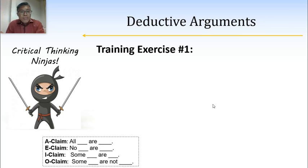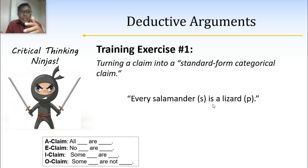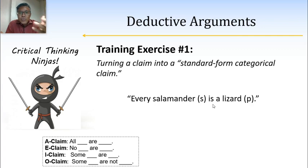Here is our training. The first step is to take a claim and turn it into one of our four standard form claims: A, E, I, or O. Let's take a look at this claim: every salamander is a lizard. You can use abbreviations — every S is a P — to reduce what you're looking at. Which standard form claim does 'every salamander is a lizard' fit? By saying 'every salamander,' we're talking about all salamanders, so it's an A claim.